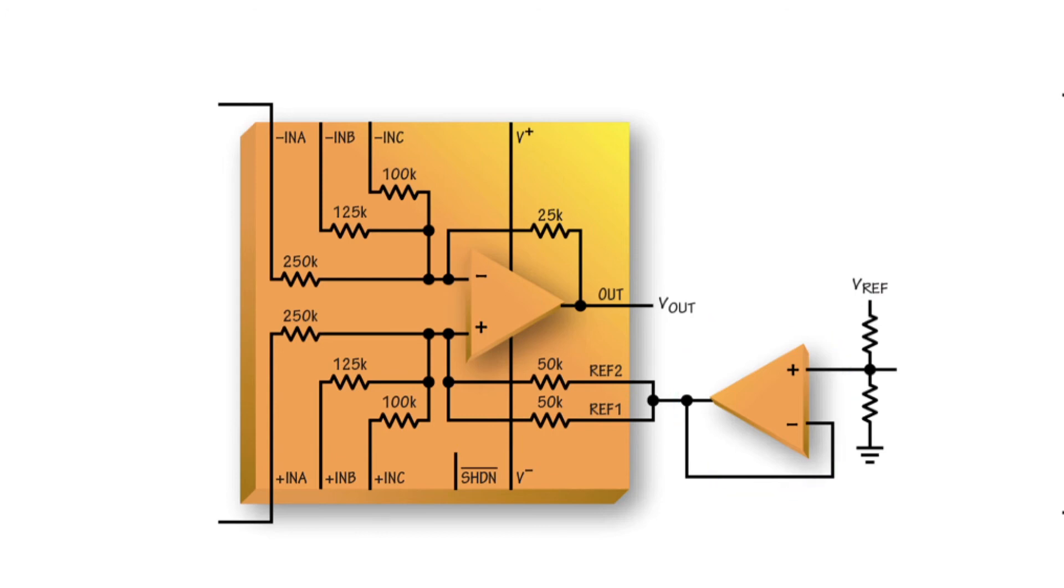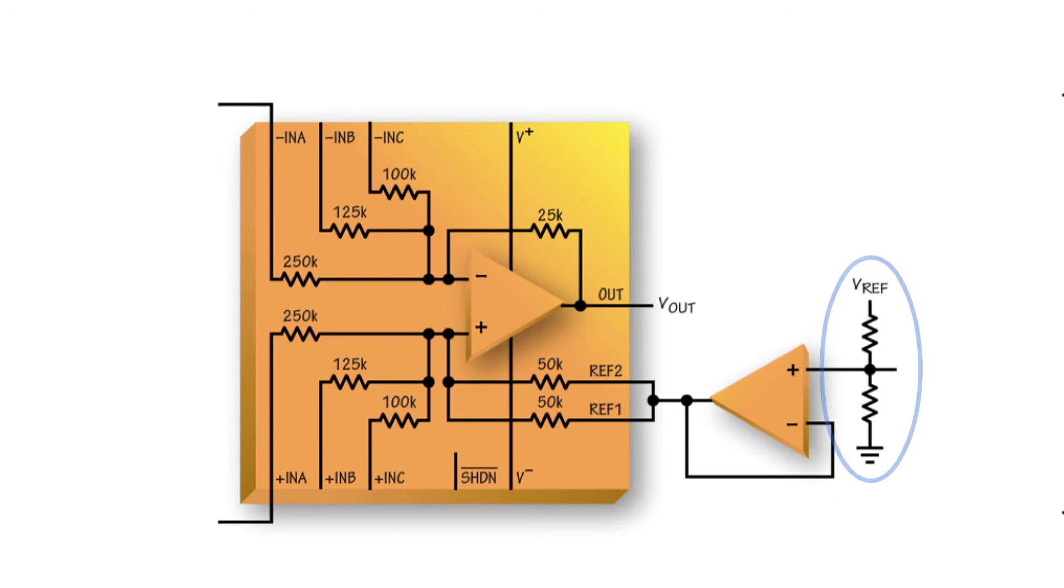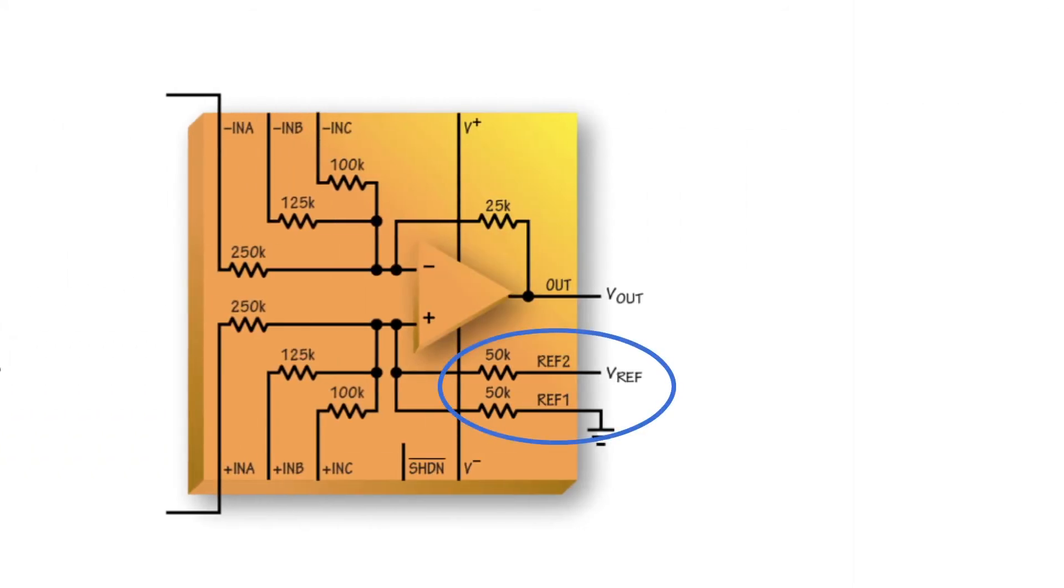But if you just want to bias the output at a level in the middle of the full-scale range of some master voltage reference, it can be more convenient to use a resistor divider from that voltage reference. That's what the built-in resistors between these two ref pins allow you to do.